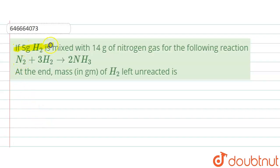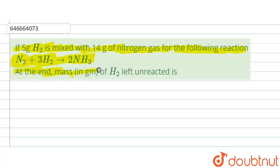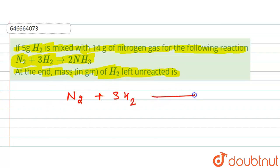The question is: if 5 grams of H₂ is mixed with 14 grams of nitrogen gas for the following reaction — N₂ + 3H₂ → 2NH₃ — what is the mass in grams of H₂ left unreacted?